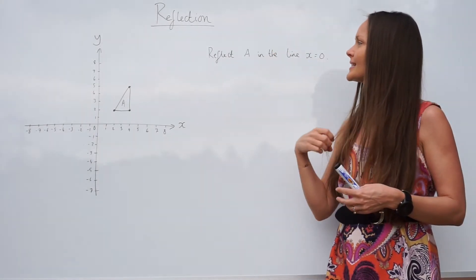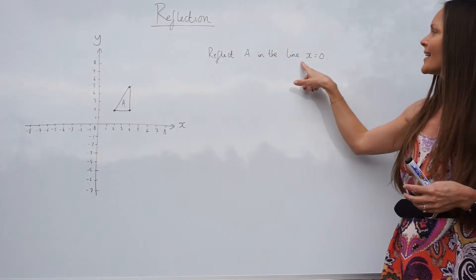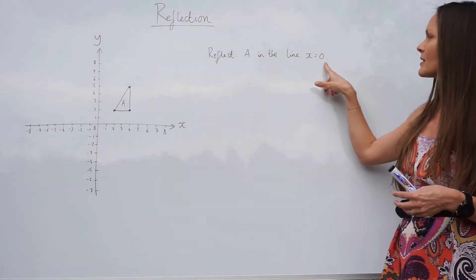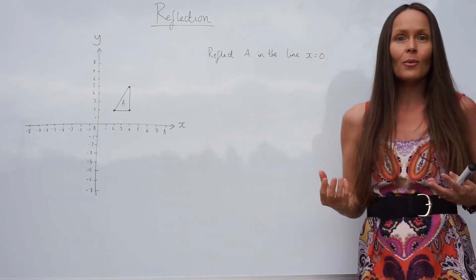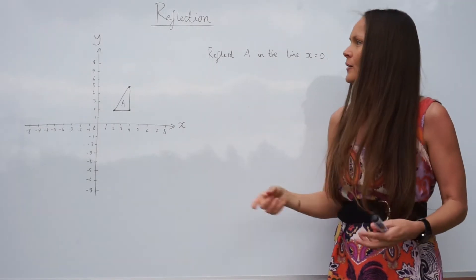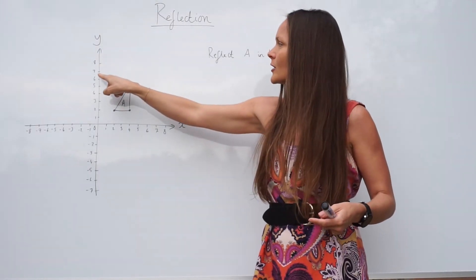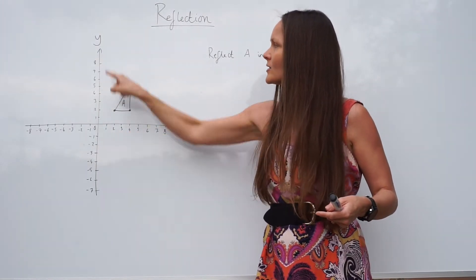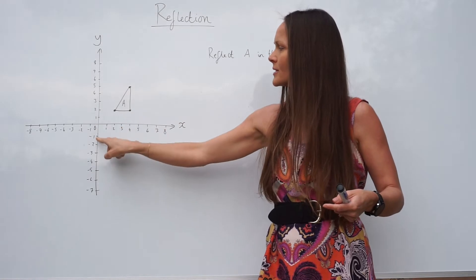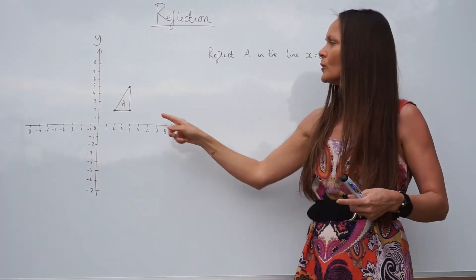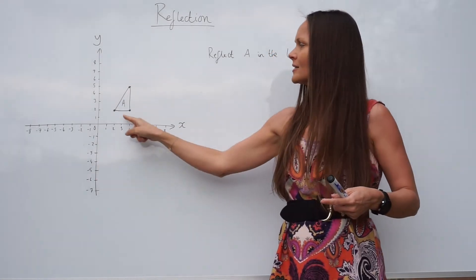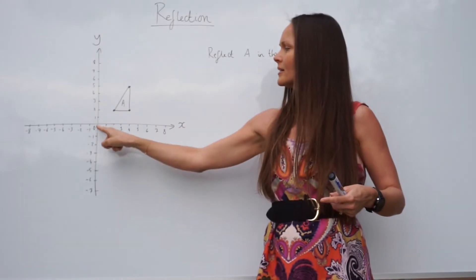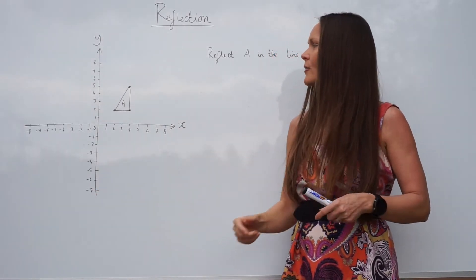In the first question it says reflect A in the line x equals 0. The line x equals 0 is just the y-axis. If you look at the y-axis, the x value is always 0 along that line. So there's x equals 0, and we need to reflect this triangle A in that mirror line, the y-axis or x equals 0.